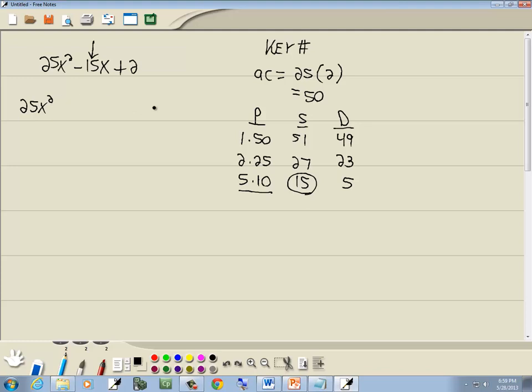And what we do is we rewrite our middle term using those two numbers. Our larger number in the P column that we're using, which is the 10, is always going to be the same sign as the middle term, which is negative. So we're going to have negative 10x. Now the number of our circles in the S column, S for same signs, are either both positive or both be negative. Since we said the 10 was negative, then the 5 has to be negative. So they're same signs.